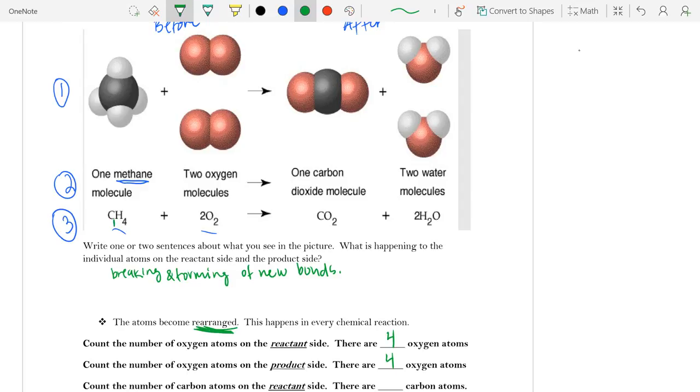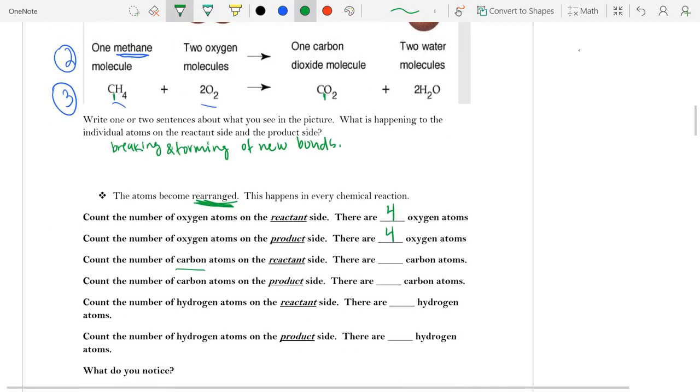Chemists are lazy. We don't write one. So there's one carbon on both sides, and we can see that with our black spheres here. We have one on the reactant side and one on the product side, so we can go ahead and fill that in in our worksheet.